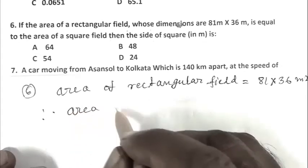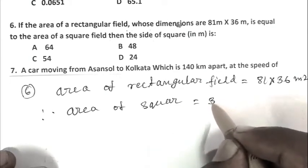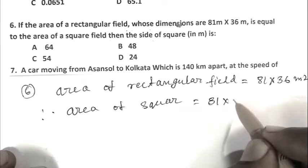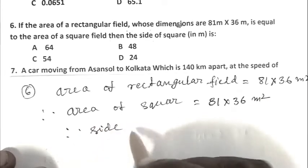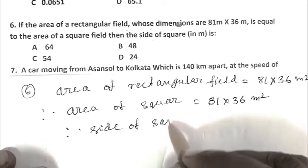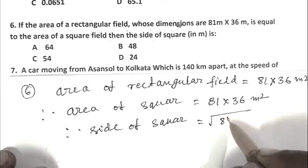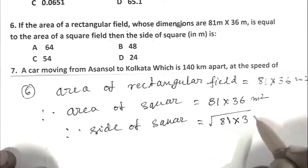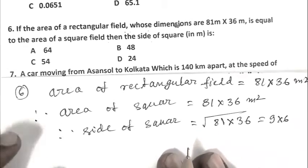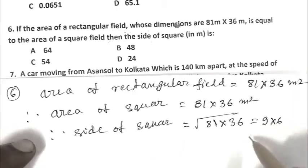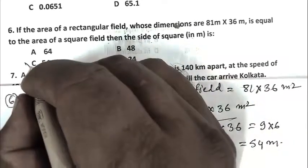Area of the rectangular field is 81 multiplied by 36 meter square. This is also the area of the square. So the side of square is square root of 81 times 36, that is 9 times 6, that is 54 meters. C is the right answer.